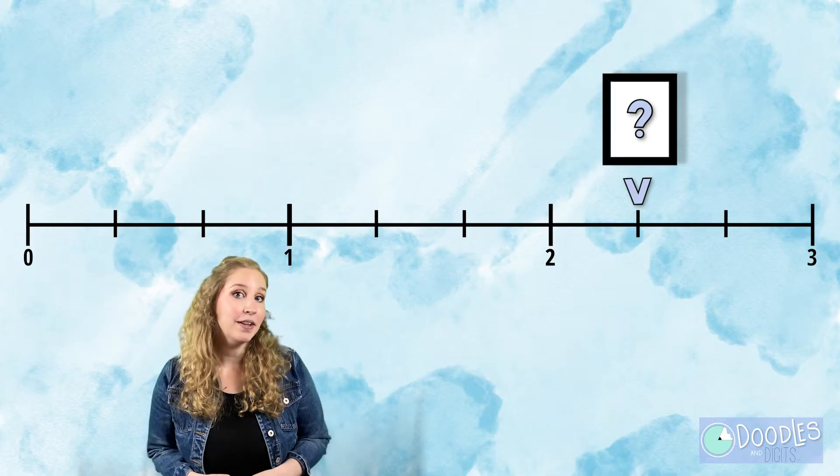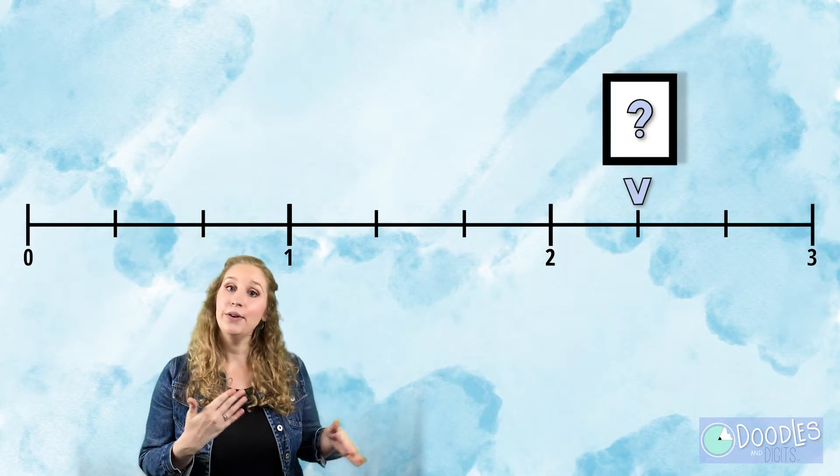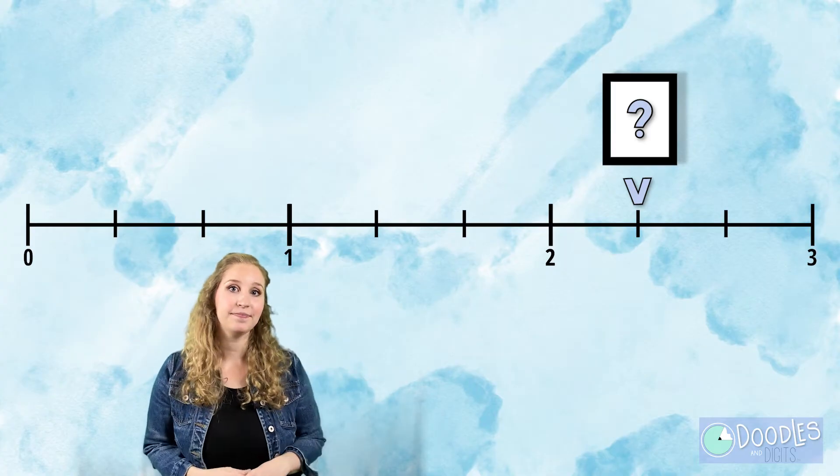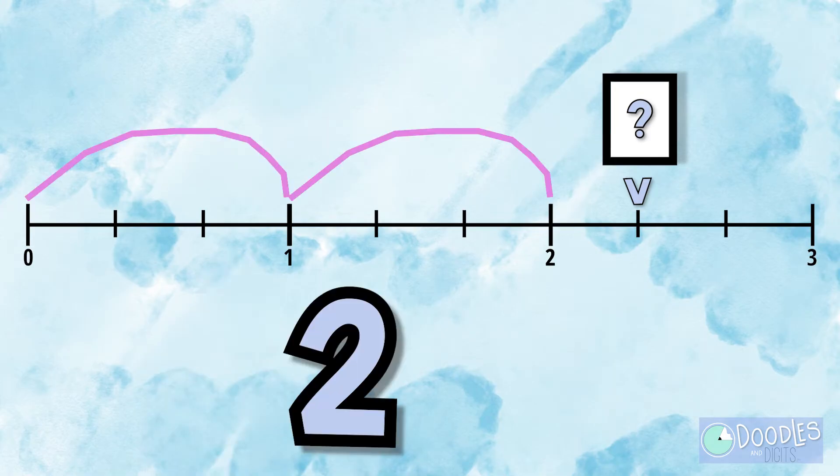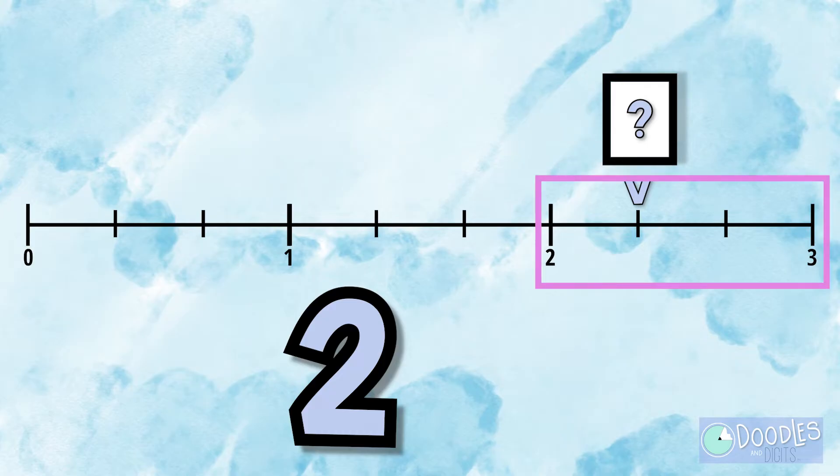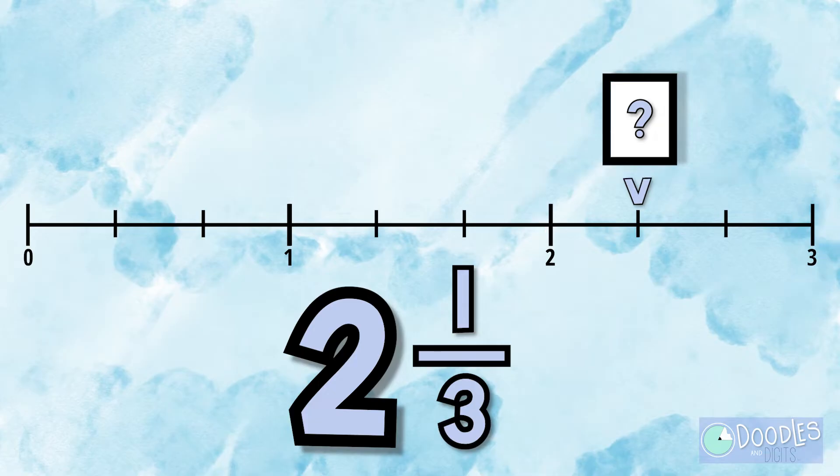You might notice on this number line, you have holes and you also have fractions. Let's first see how many hole numbers we're jumping. We're jumping two hole numbers, so our hole number is going to be two. Now we're going to look at the fraction and try to figure out what it's broken down into. It's broken down into thirds, so our denominator will be three. Now we will see how many thirds we jump. We jump one third after two, so our mixed number will be two and a third.